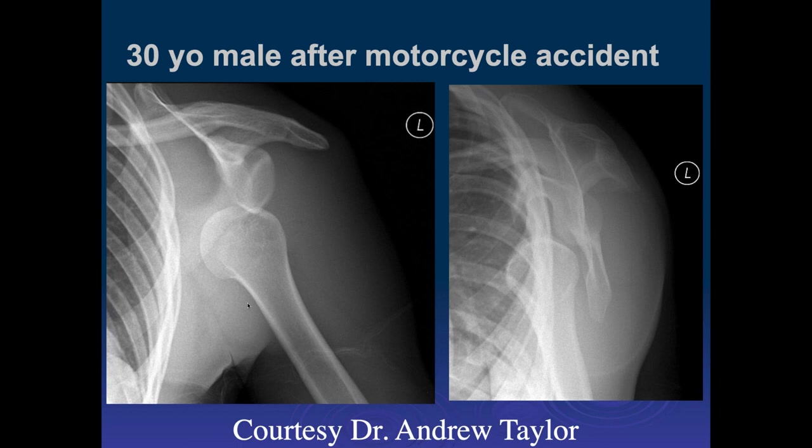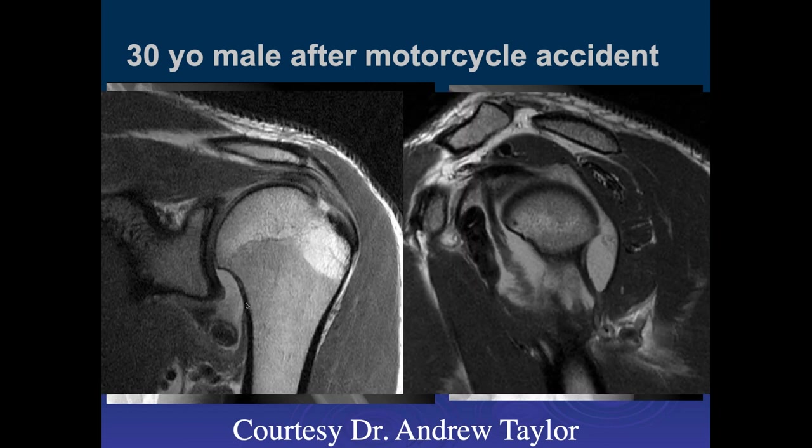Brachial plexus injuries can occur with that type of dislocation. Looking at the next case — same as the other one except not as pretty. We see the anterior inferior dislocation of the humeral head. It looks like the shoulder has been relocated and there seems to be some low-density substance in the inferior capsule.